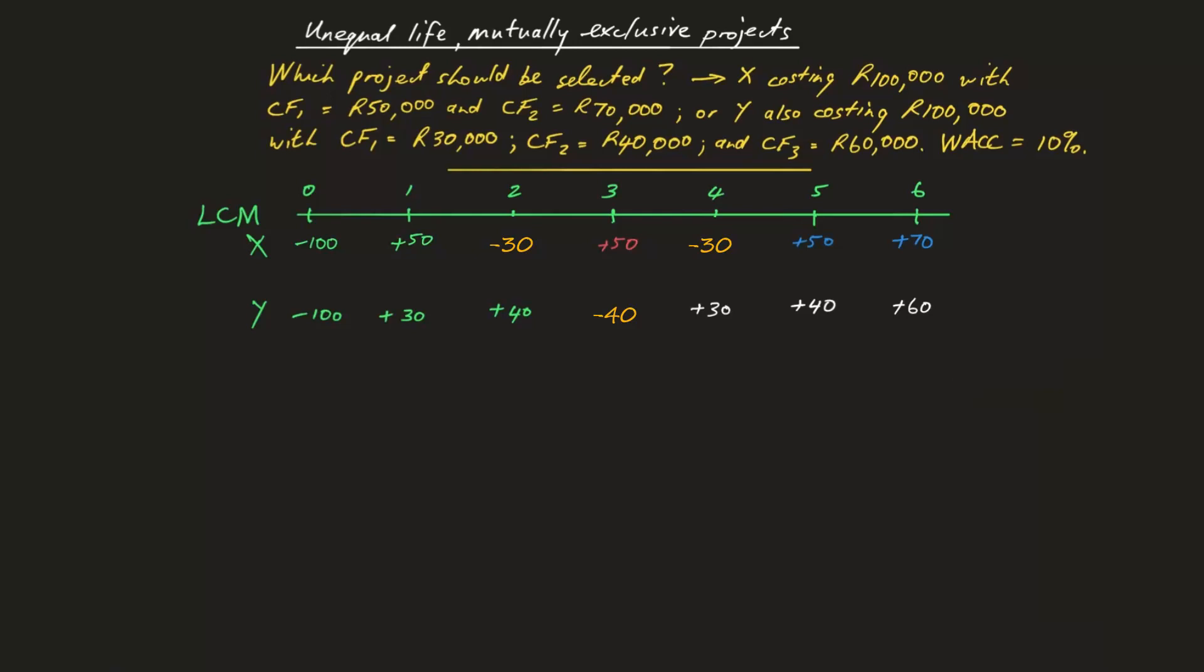The net present value can now be calculated for both Project X and Y over the six-year horizon for both, using the weighted average cost of capital of 10%. The higher NPV is Project Y, which is the one that should be selected by the financial manager.